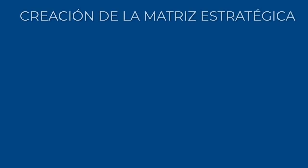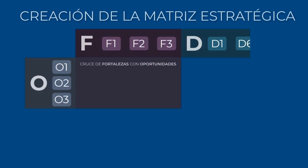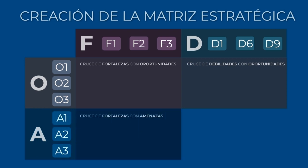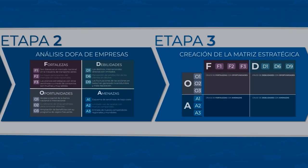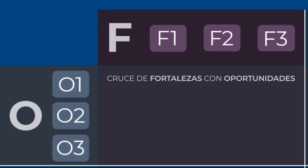In stage 3, we must cross fortalezas with opportunities, debilidades with opportunities, fortalezas with threats, and debilidades with threats. In this second lesson, the cruce in this third stage produces the following results.